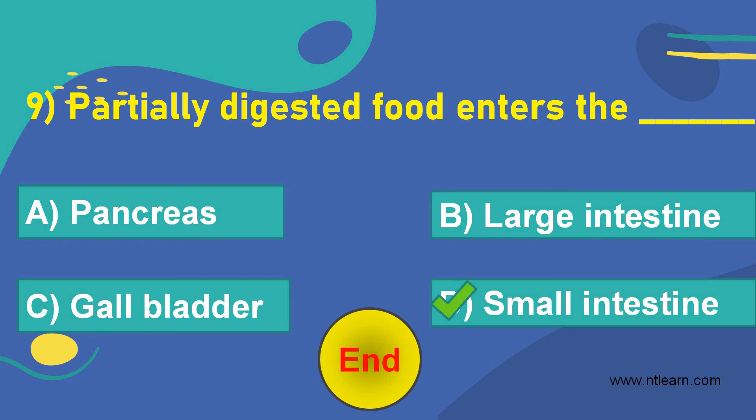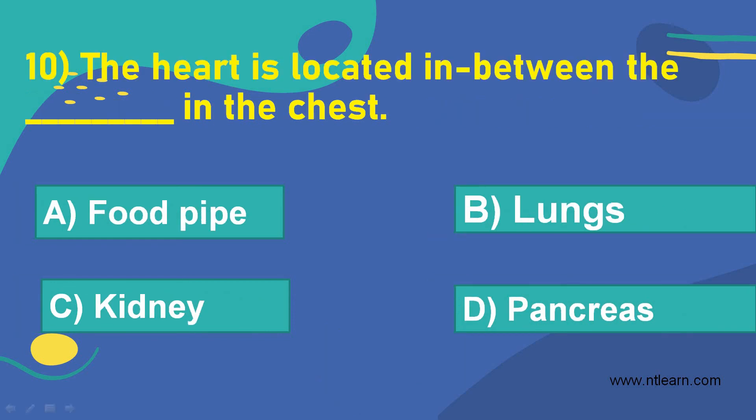Let's move on to the next question. The heart is located in between the dash in the chest. Option A, food pipe. Option B, lungs. Option C, kidney. Option D, pancreas.